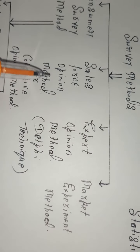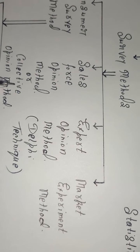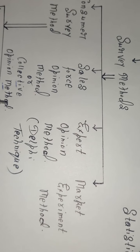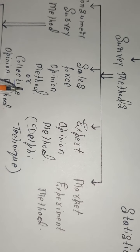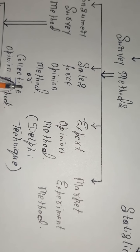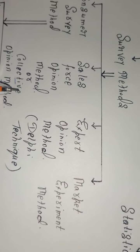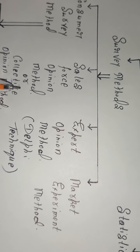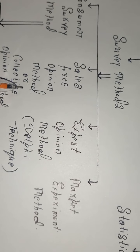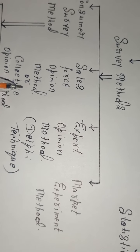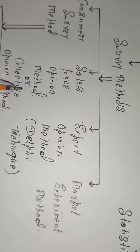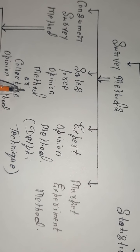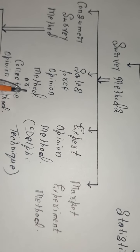The next method is the salesforce opinion method, or collective opinion method. This is one of the very important methods, followed in order to find the demand with the help of intermediaries and the salesforce. The company takes input from all its salesforce persons about the future demand of the product. Sometimes the company also uses its intermediaries such as wholesalers, retailers, and so on in the survey to get an idea about the future demand.